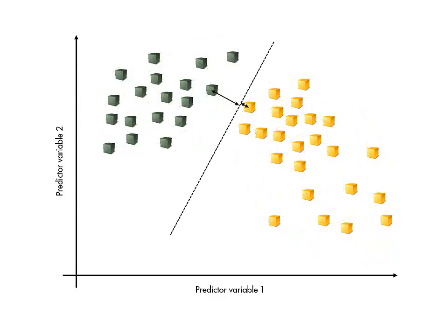Intuitively, it seems like a better approach for this kind of problem would be to put the boundary as far as possible from any of the observations. This is the basic idea behind support vector machine classification.